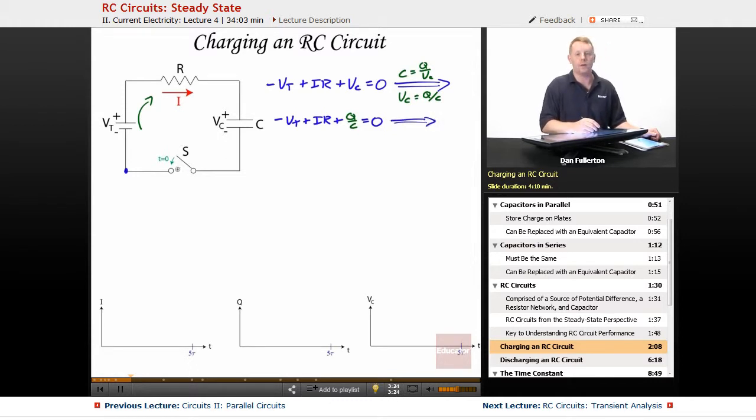But we also said that at time t equals zero, when we first close that switch, the charge on our capacitor is going to be equal to zero. It's uncharged. So that simplifies our analysis a little bit and we have minus VT plus IR equals zero, which implies that VT equals IR. Probably not a surprise. VC therefore must equal zero. So initially the current flowing through our circuit is going to be VT over R. We also know the charge on our capacitor at time equals zero is equal to zero, and the voltage across our capacitor, because Q is zero, must start at zero.